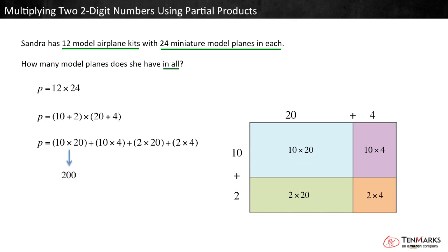10 times 20 is 200. 10 times 4 is 40. 2 times 20 is 40. And 2 times 4 is 8. Add the partial products to find the total area or total product. 200 plus 40 plus 40 plus 8 equals 288.